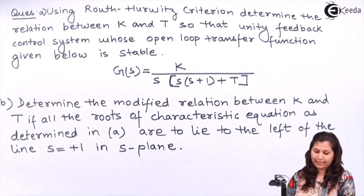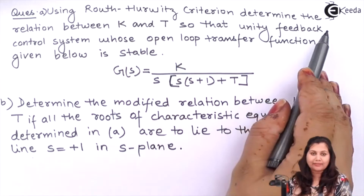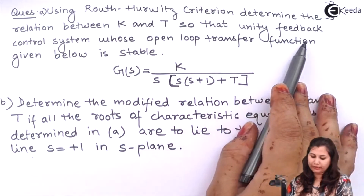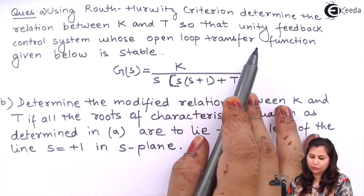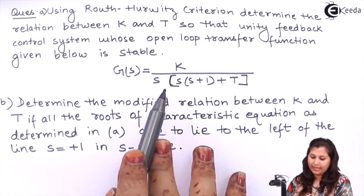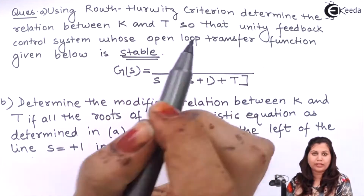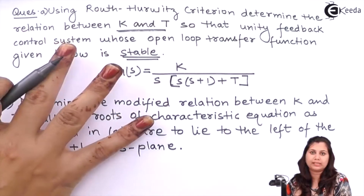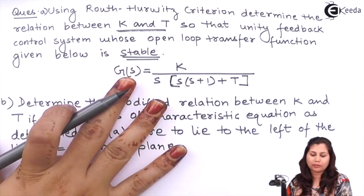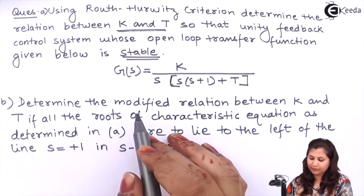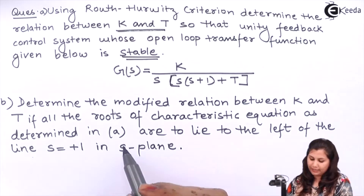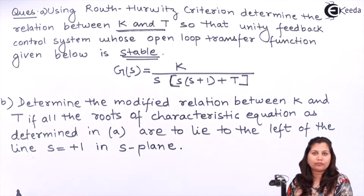Our problem is that using Routh's criteria, we have to determine the relation between K and T in this unity feedback control system. It is having the open loop transfer function given to us, and this system is stable. So we have to determine the relationship between K and T so that this system should be stable. This is our first part of the problem.